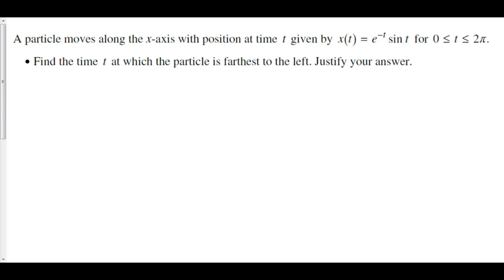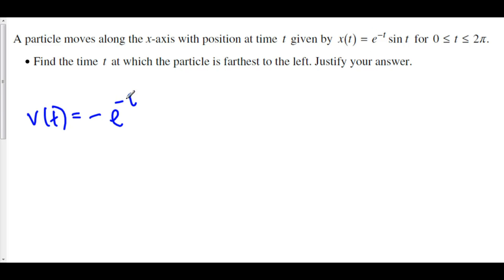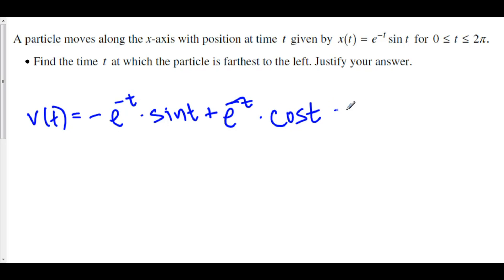To find the velocity function, take the derivative of position using product rule and chain rule. The derivative of e to the negative t is negative e to the negative t by chain rule, times sine t, plus e to the negative t times the derivative of sine t, which is cosine t. Set this equal to 0.